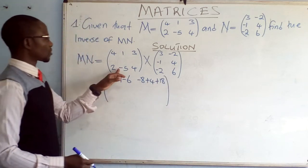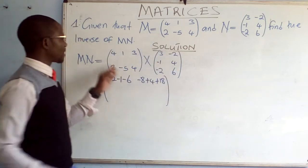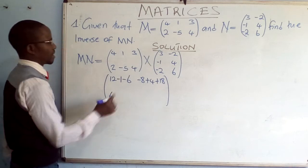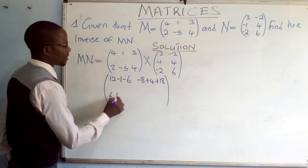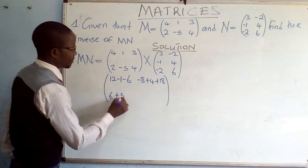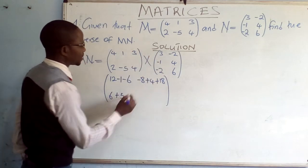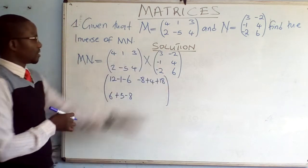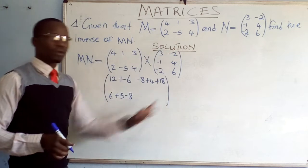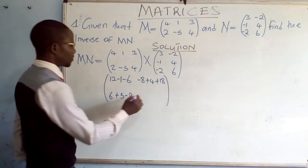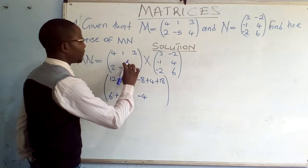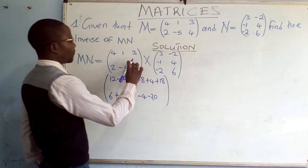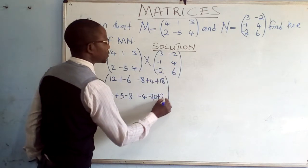We come to the last row since the first row has multiplied both columns. 2 times 3 gives 6. Negative 5 times negative 1 gives positive 5. 4 times negative 2 gives negative 8. Then this row and the last column: 2 times negative 2 gives negative 4. Negative 5 times 4 gives negative 20. 4 times 6 gives positive 24.